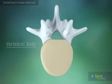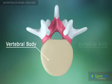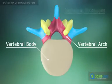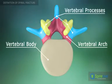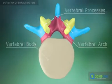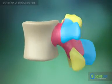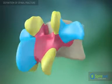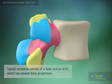A typical vertebra consists of a body and a vertebral arch, which has several processes for articular and muscular attachments.